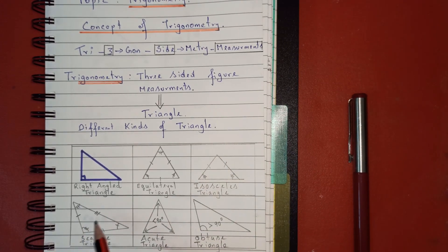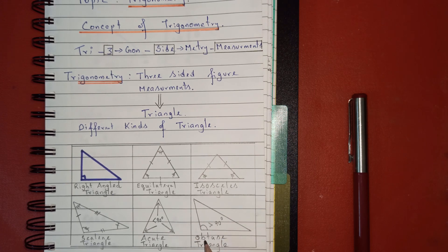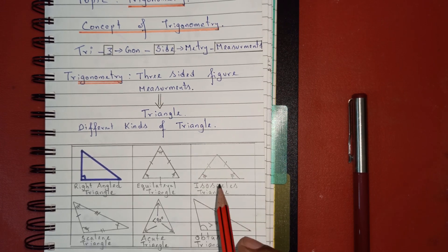We also have a scalene triangle where all sides are different, an acute angle triangle where each angle is less than 90 degrees, and an obtuse angle triangle where one angle is greater than 90 degrees. Among these triangles, trigonometry is only applicable for right angle triangles.